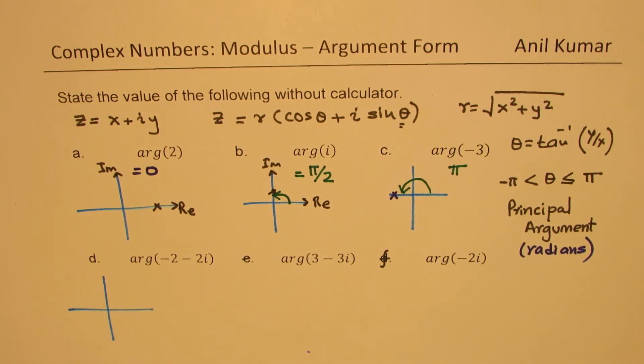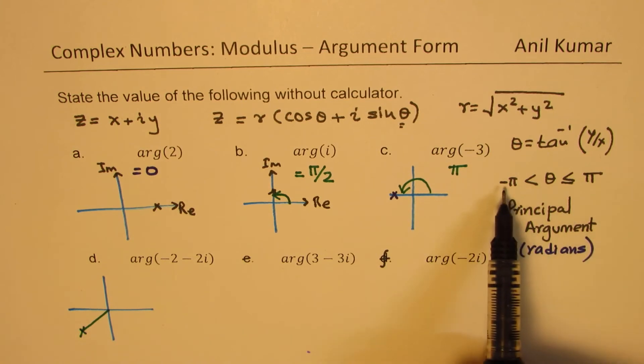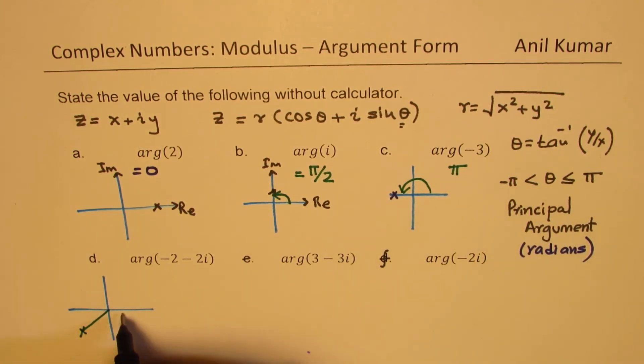So it is minus 2 minus 2i. So when I do minus 2 minus 2i, that means we are talking about that position. So in this case, remember, the principal argument is between minus pi to pi. So the answer should be this one. So that gives you minus 3 pi by 4. Is that correct? Now if you use calculator, you may not get this answer. You may get in quadrant 4. Then it needs a correction.